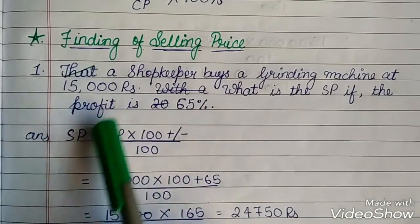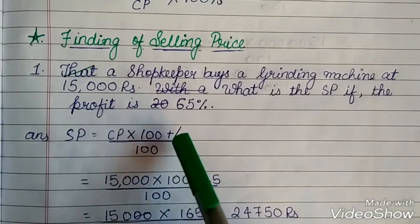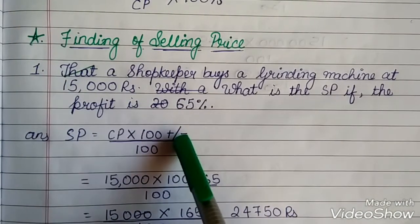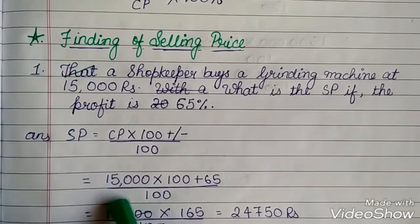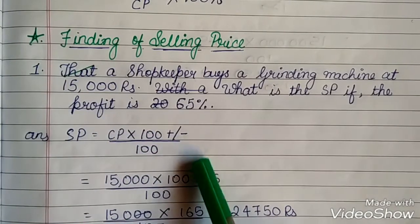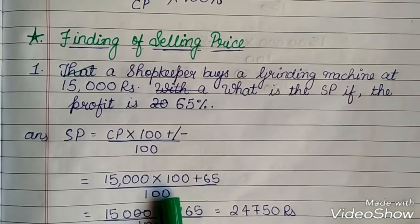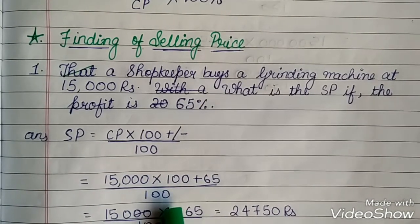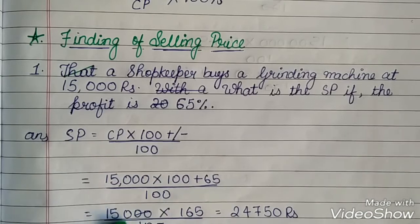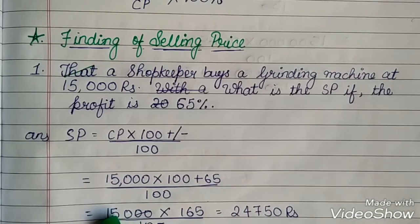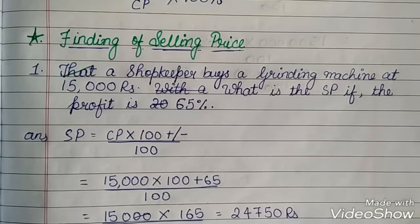The formula of finding selling price is CP multiplied by 100 plus or minus. Plus will become when profit will be there and minus if it will be a loss divided by 100. So, 15,000 which is the CP, 100 plus 65 because here it is a profit, divided by 100. 15,000 multiplied by 165 divided by 100 rupees. The cancellation cut it down and 150 into 165 is equal to 24,750 which is the selling price.